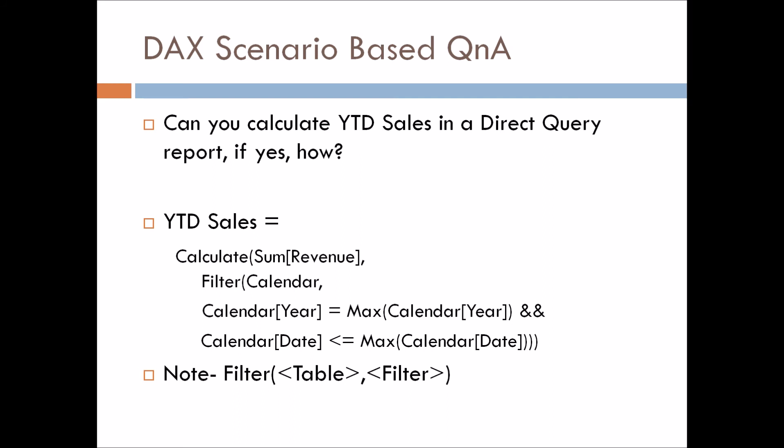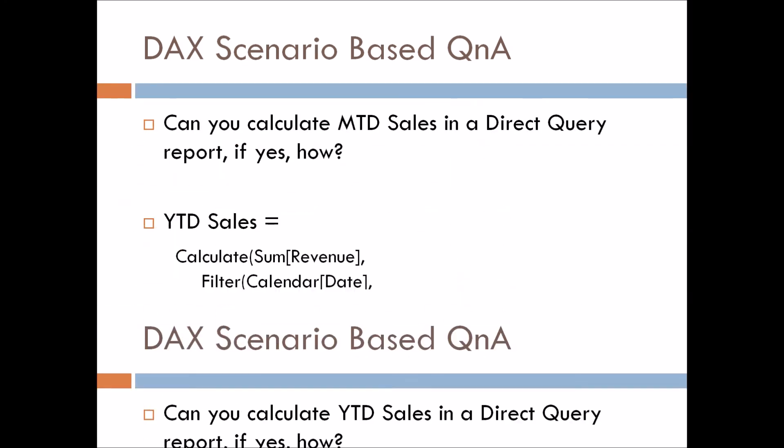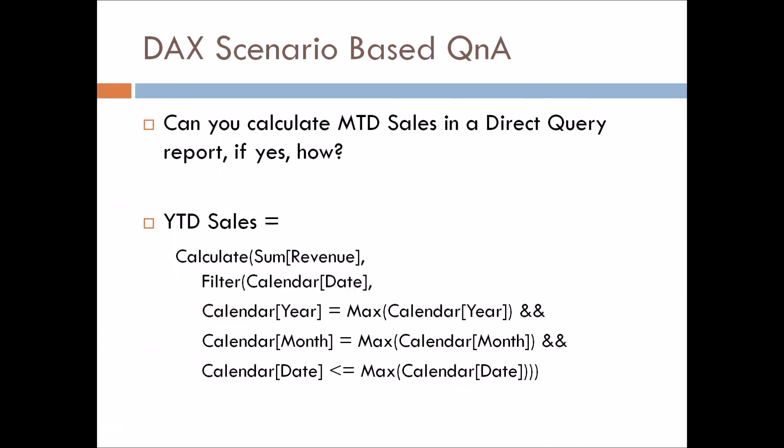So in this way, you can answer this question. Let's move to the fourth and last question: how can you calculate the month-to-date sales in a DirectQuery report? Again, we will be using the same two functions — FILTER and MAX — but in the filter section, we will add one more filter for month.